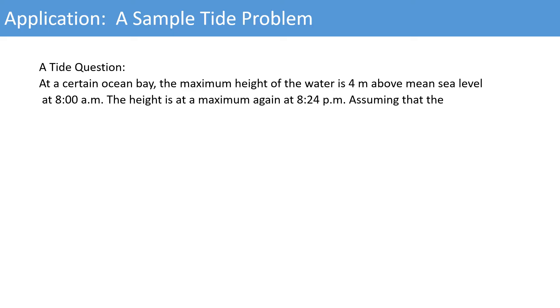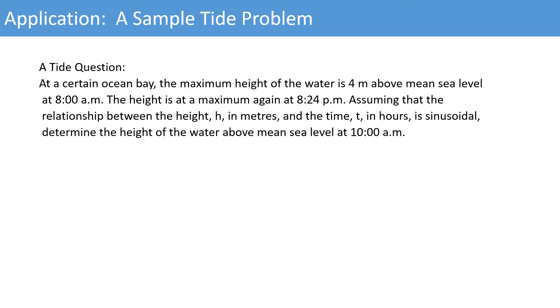A tide question. At a certain ocean bay, the maximum height of the water is 4 meters above mean sea level at 8 o'clock a.m. The height is at a maximum again at 8:24 p.m. Assuming that the relationship between the height h and the time t in hours is sinusoidal, determine the height of the water above mean sea level again at 10 o'clock a.m.